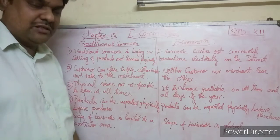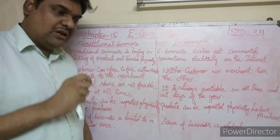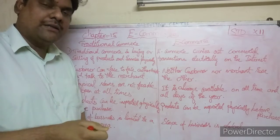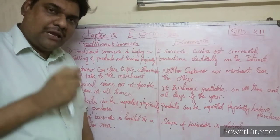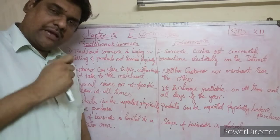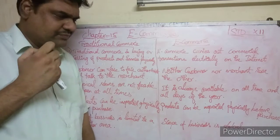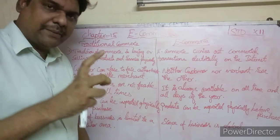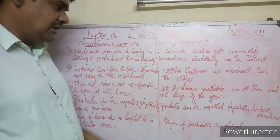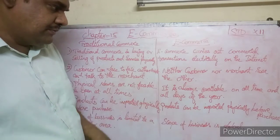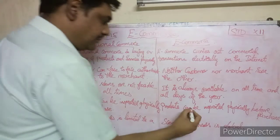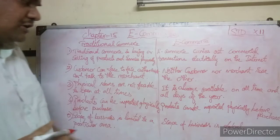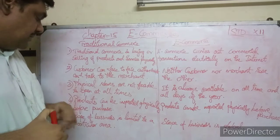In traditional commerce, products can be inspected physically before purchase. For example, you can check vegetables, dresses, or any item by touching and feeling them. But in e-commerce, you cannot inspect the product physically before buying.